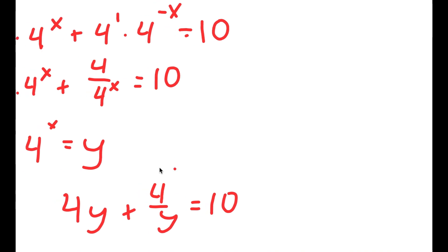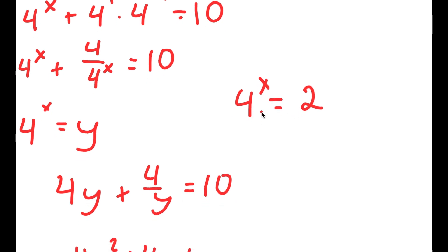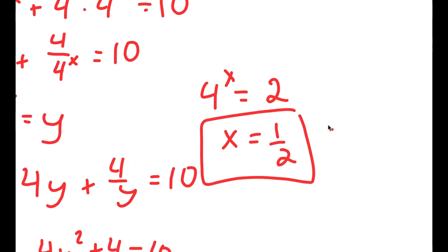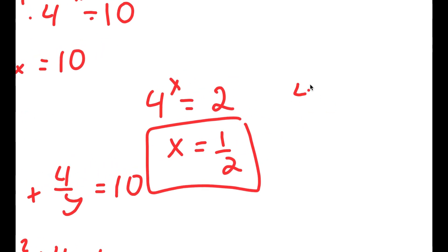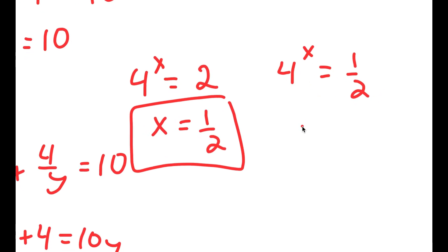Now, remember we let 4 to the power of x equal y. So first, 4 to the power of x is equal to 2, which means x is equal to 1 half. And for 4 to the power of x is equal to 1 half, this means x is equal to negative 1 half.